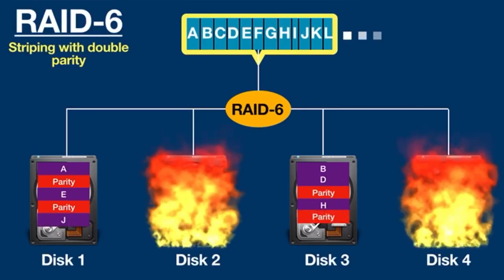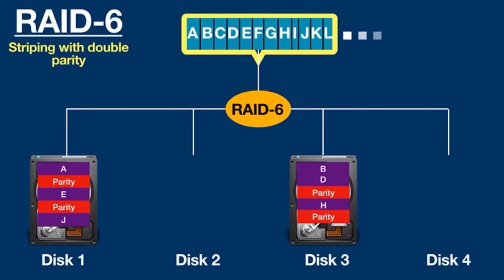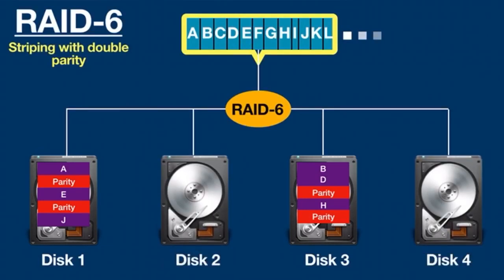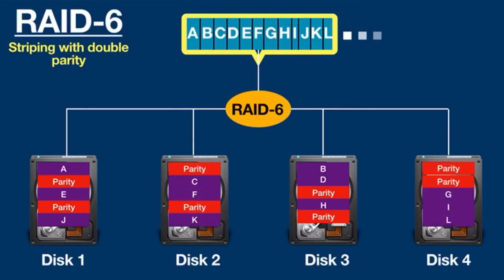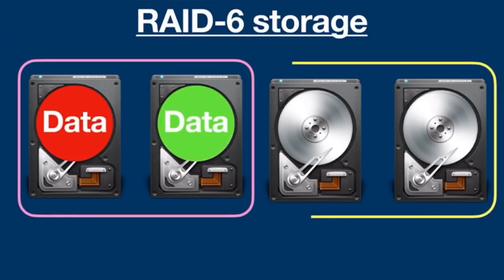If two drives fail, you simply replace the broken drives and RAID 6 will use the double parity information from other drives to rebuild them. While the chances of two drives breaking down together are very low, if a drive in a RAID 5 fails during rebuild and another crashes, all data is lost. With RAID 6, the array survives even after losing a second drive. It is suitable for application servers. In a RAID 6 setup, two drives are used for actual data and two drives are used to store double parity.